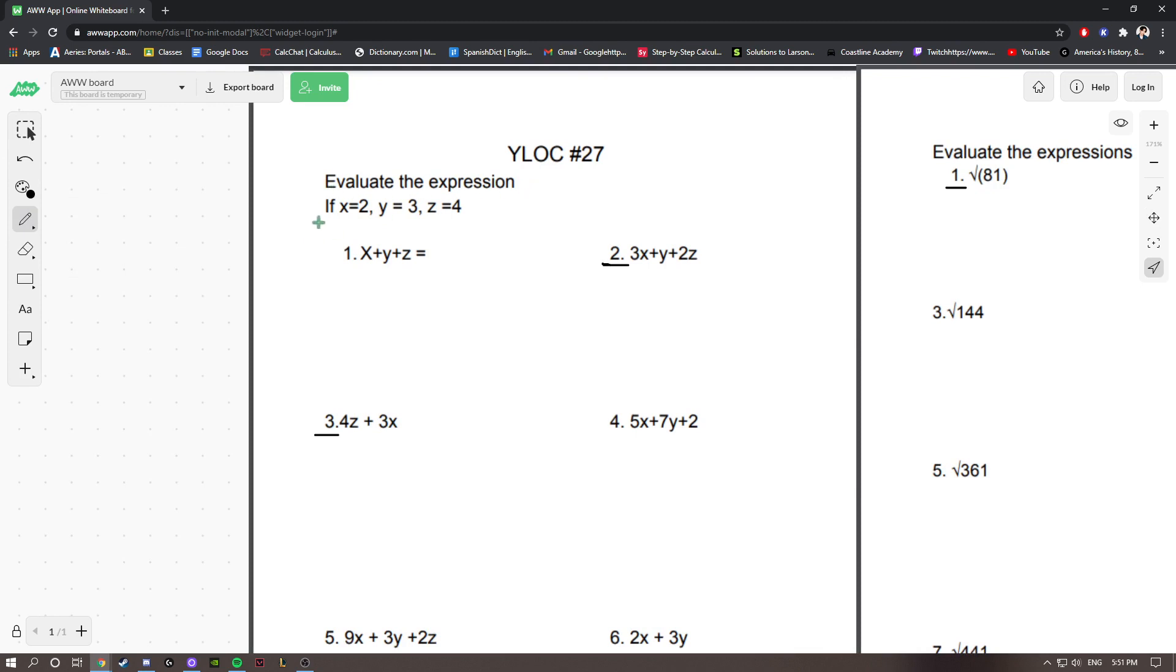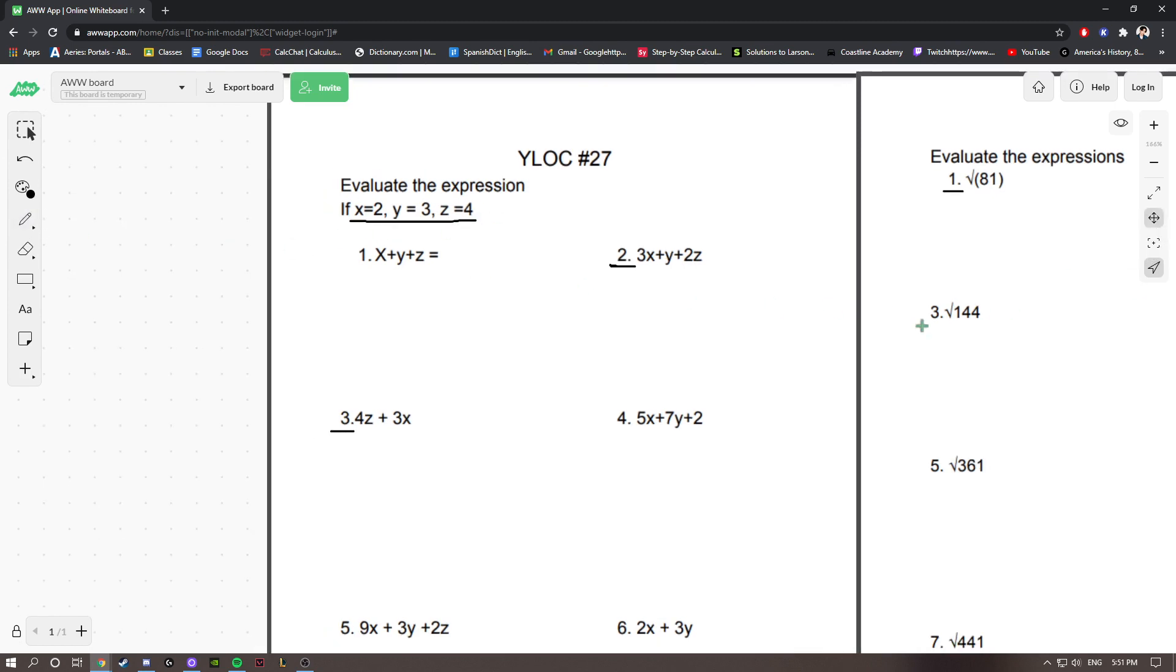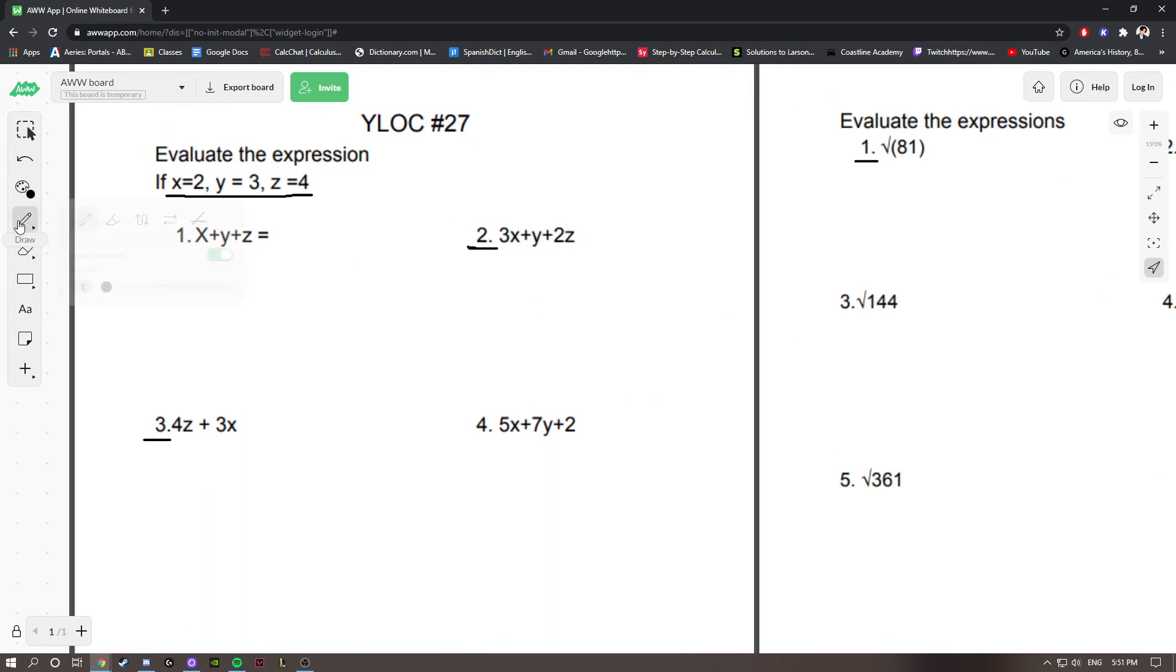It says, evaluate the expression if x equals 2, y equals 3, and z equals 4. So these are our variables, and the question defines them for us. Basically what we have to do is substitute the value of the variable into our expression whenever the variable appears.